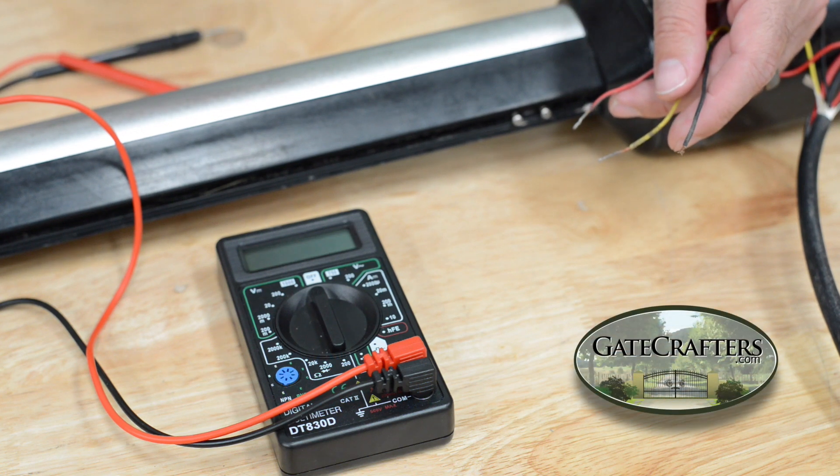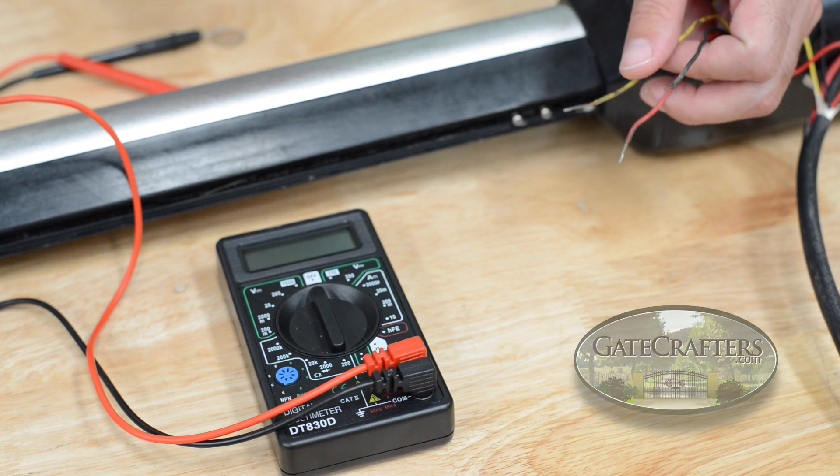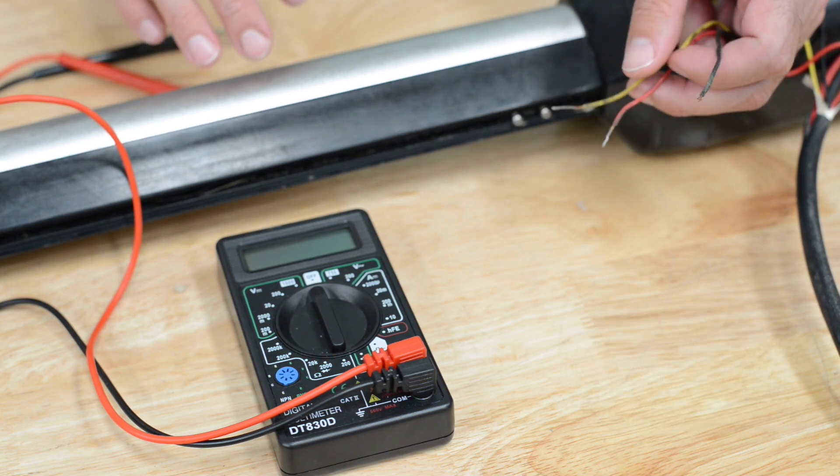This is a quick video for understanding when a technician asks you to check continuity on a gate opener. We're using the ES-1000 as an example.